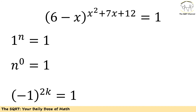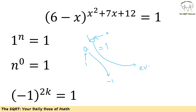We are going to use a key trick. We know the possible cases when a to the power of b equals 1: the base a can be 1, or the exponent b can be 0. There is another case: a can be negative 1 and the exponent must be an even number. Let's focus on these three cases.